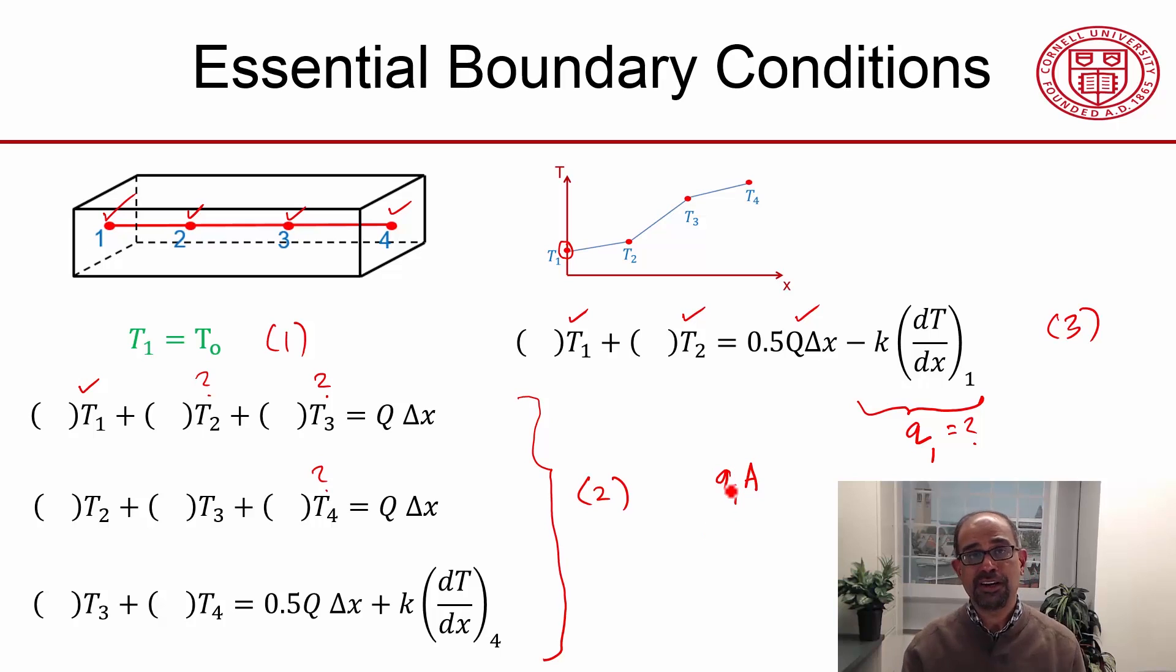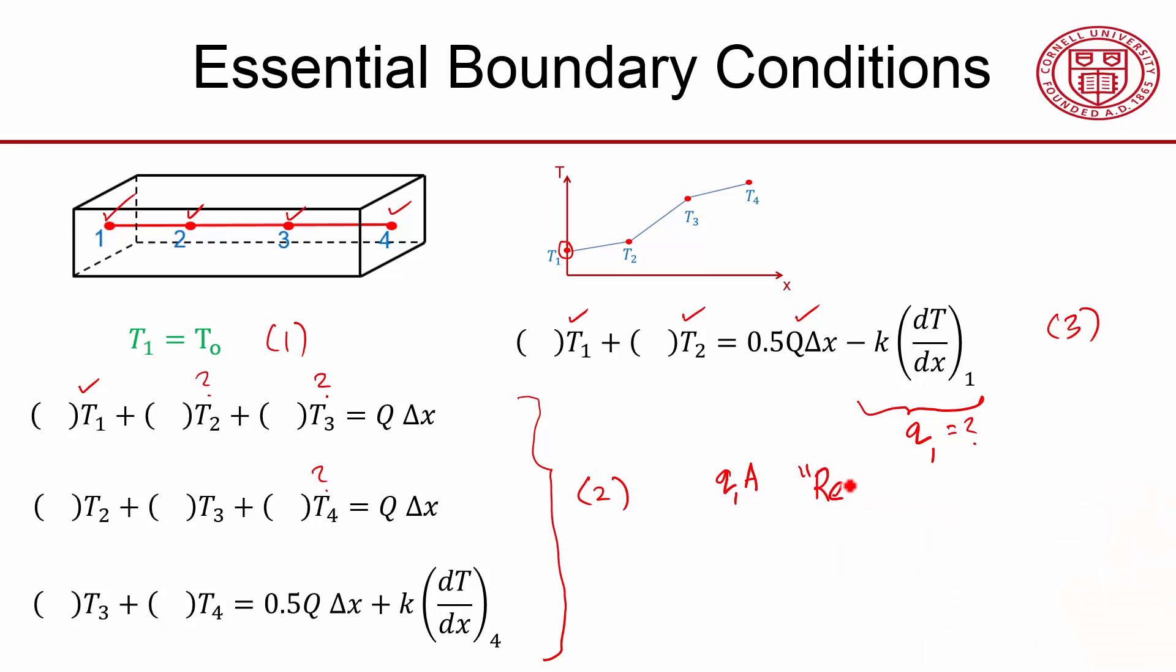I can do a check on the solution, whether it satisfies the heat balance or energy balance. I can check that the heat flow coming in, that's this over here, plus the heat generated, which I know—that's Q times the volume—is equal to the heat going out, which I know from the boundary condition. This entity is very important to check the energy balance, and it's called a reaction in ANSYS.